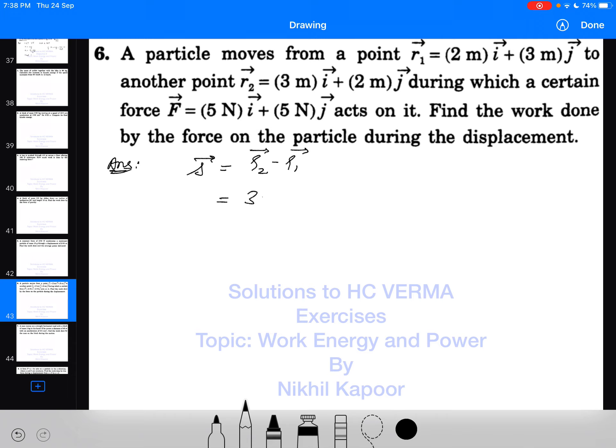So that would be (3i + 2j) minus (2i + 3j). So 3i minus 2i will be equal to 1i, and 2j minus 3j will be minus j. So displacement is i minus j.